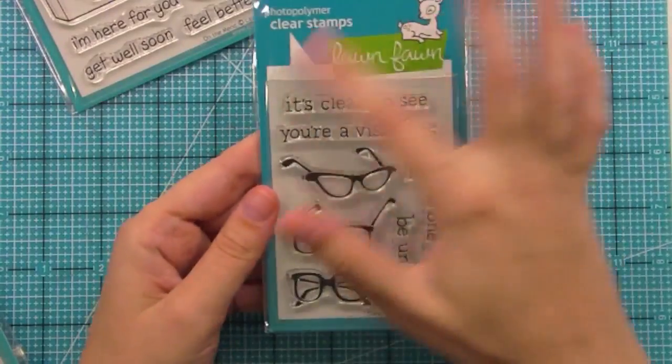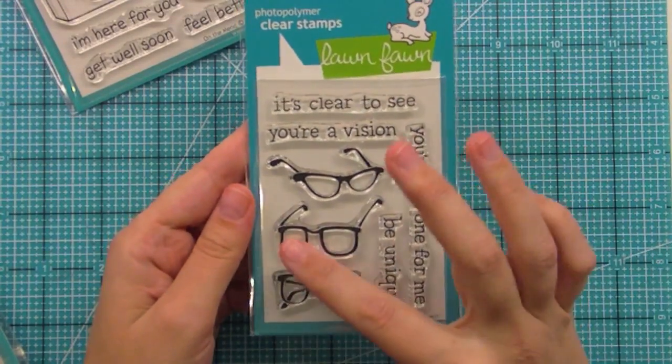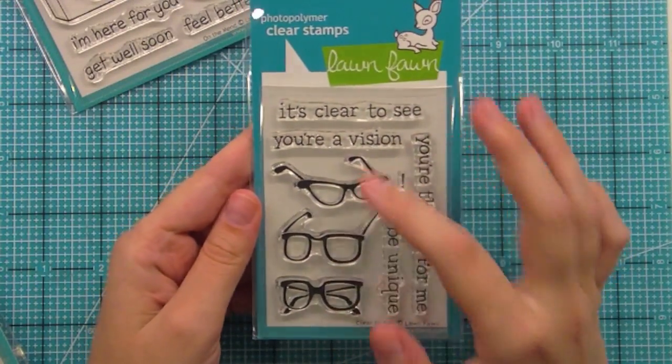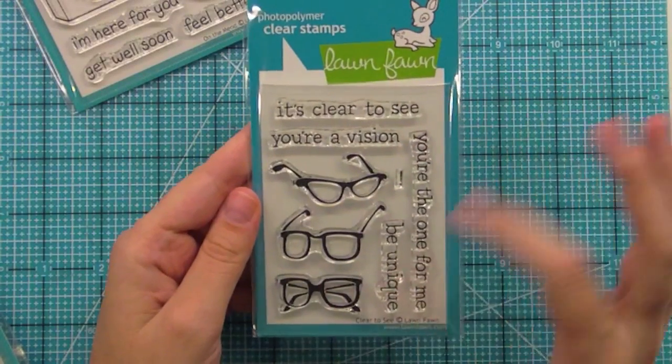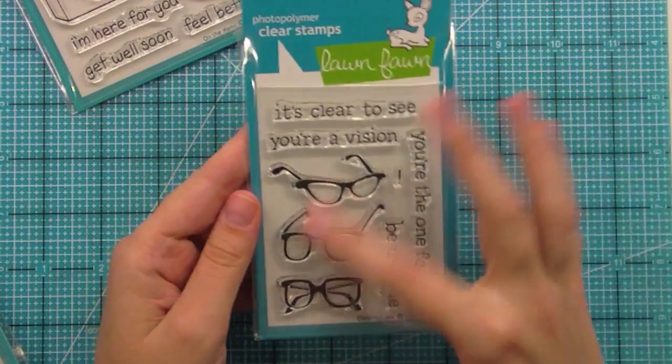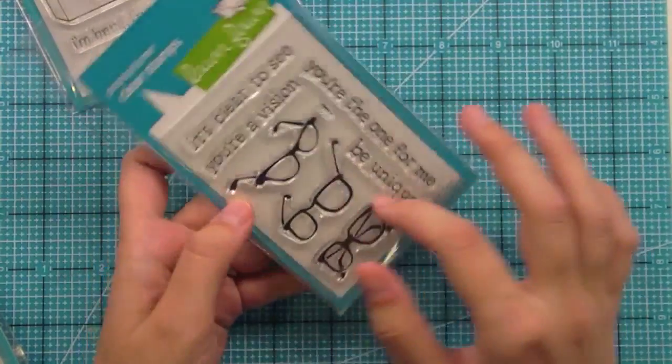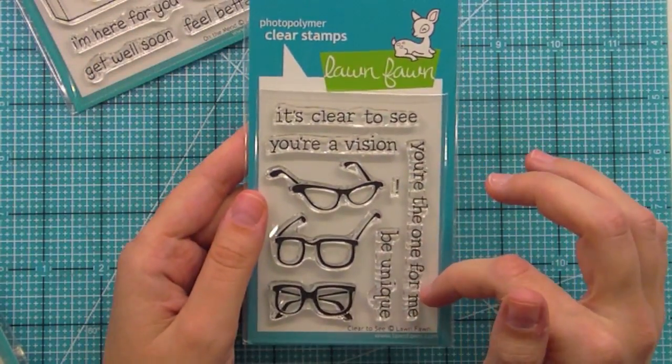This is Clear to See, another four by three set. We've got the glasses, which are just so fun and funky. I guess for a girl, I'm a total nerd, so I just love these glasses and these fun sentiments that go along with it in this really cute font.